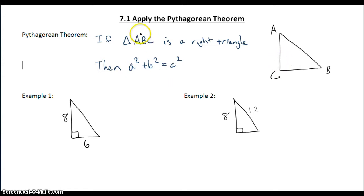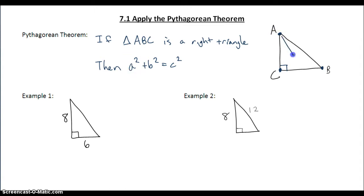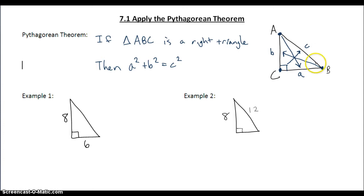The second question we need to answer is how do we go from capital A to lowercase a? If we look at our picture, capital A is a point, capital B is a point, and capital C is a point. We have to have a right triangle, so let's make our C vertex the right angle. To go from capital A to lowercase a, we go across the triangle. The side opposite angle A is lowercase a, the side opposite angle B is lowercase b, and the side opposite vertex C is lowercase c — which in this case is our hypotenuse. And a and b are the two legs of the right triangle.